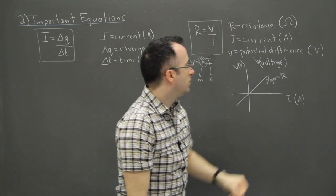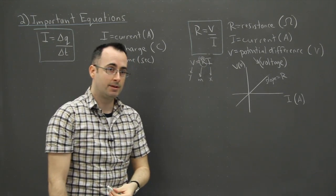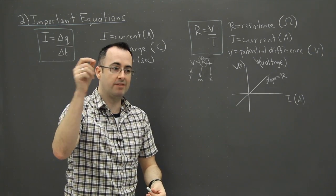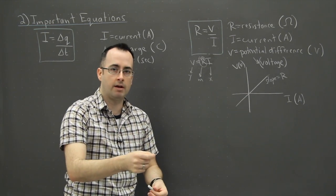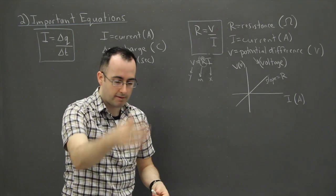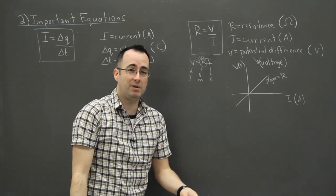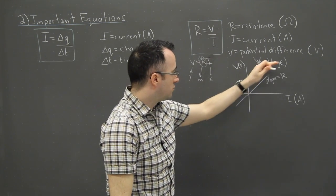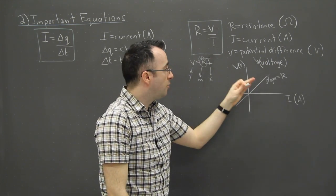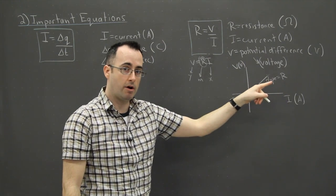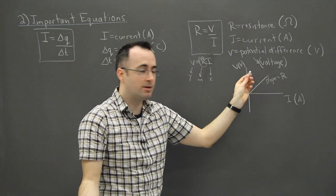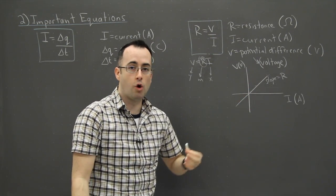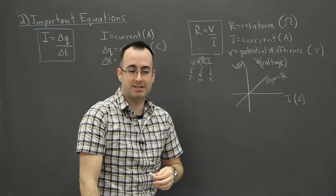That's useful if your goal is to find an unknown resistance. Instead of calculating R from individual V and I pairs and averaging, you plot many data points, draw a best-fit straight line, and the slope gives you a much better estimate of R — you can even determine the uncertainty from it. If something behaves this way — a straight line — we say it's ohmic, because it follows Ohm's Law.